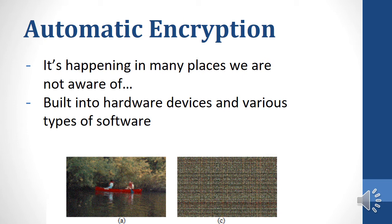Automatic encryption happens in all sorts of places that you are not aware of. It's built into some hardware devices and also into various types of software. In the photos shown, the photo on the left has been encrypted to what looks like a strange grid. On the right is the encrypted photo, which nobody would be able to interpret if they just saw it.